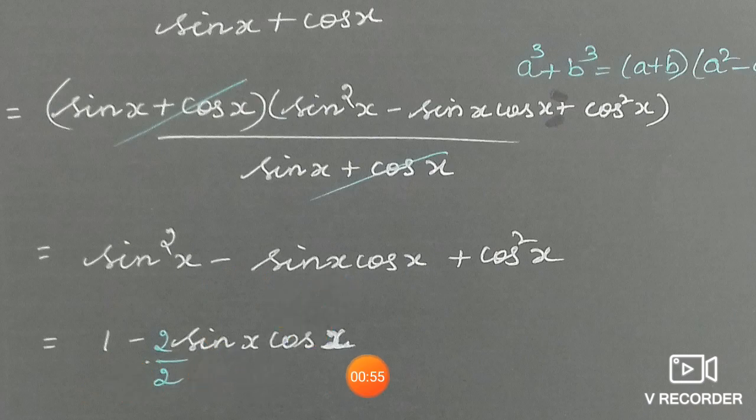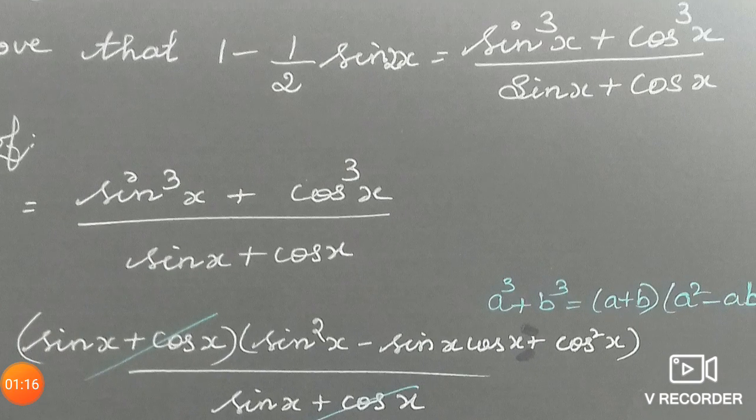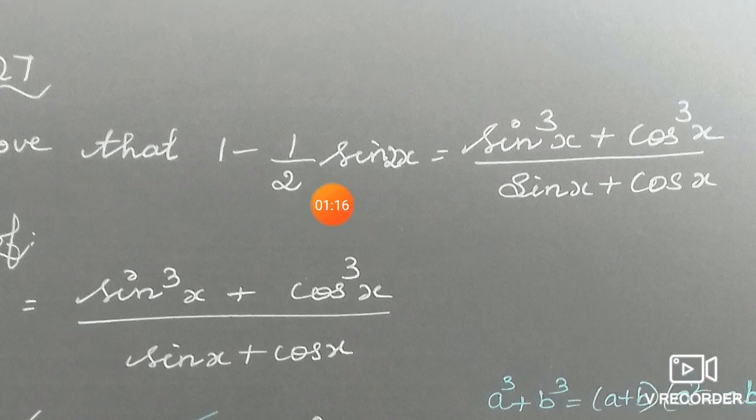Now, I already told you sin x cos x is product identity, so that is half the product of sin 2x. So, in proof, you have left hand side sin 2x.